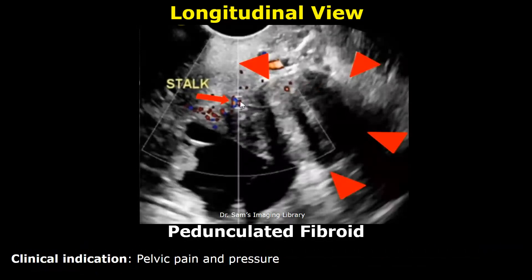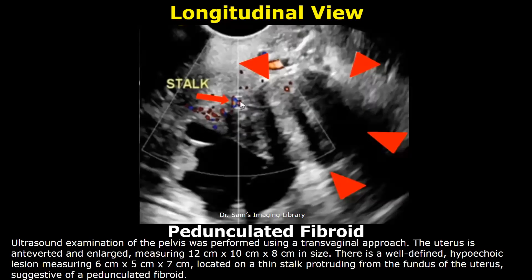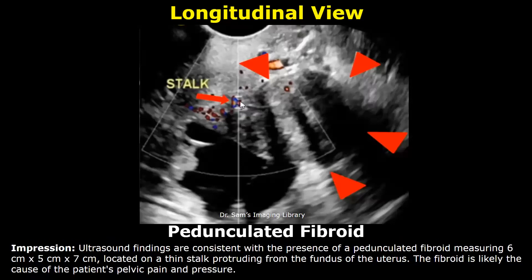Here is a report of pedunculated fibroid. The clinical indication was pelvic pain and pressure. The findings for pedunculated fibroid include: 'A well-defined hypoechoic lesion located on a thin stalk protruding from the fundus of the uterus, suggestive of pedunculated fibroid.' In the impression, you can mention the presence of a pedunculated fibroid, followed by its measurement, the stalk, and its location. After that, write: 'The fibroid is likely the cause of the patient's pelvic pain and pressure.'